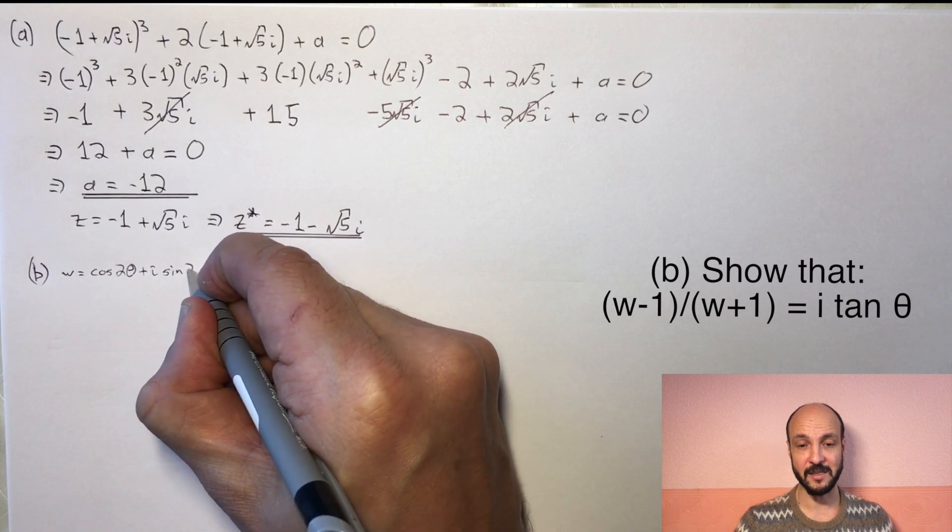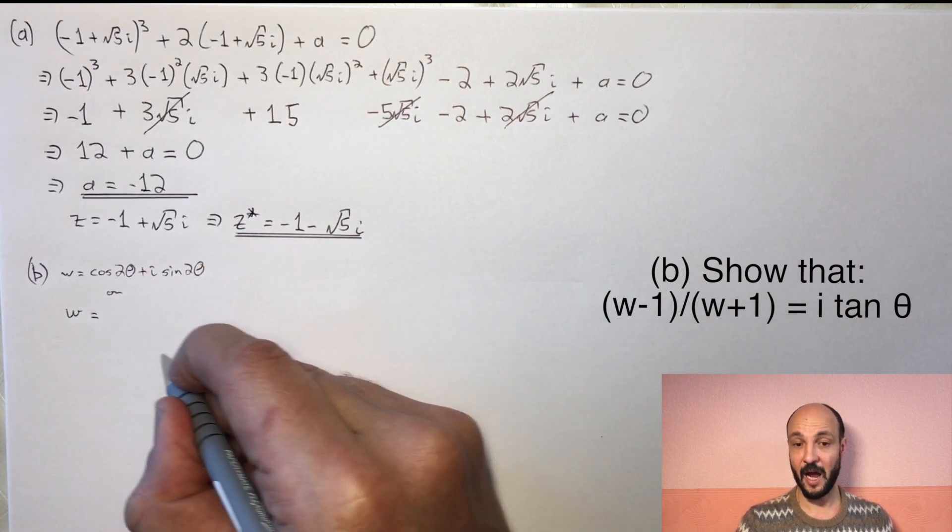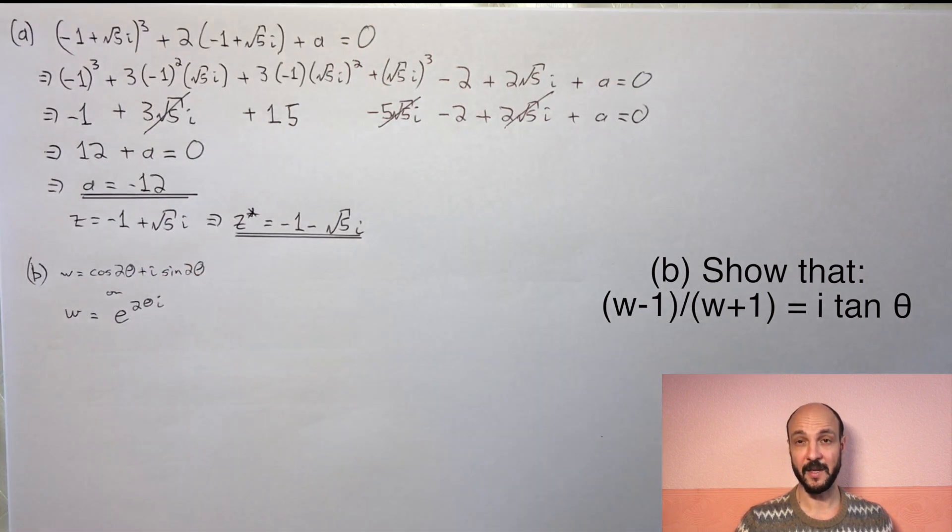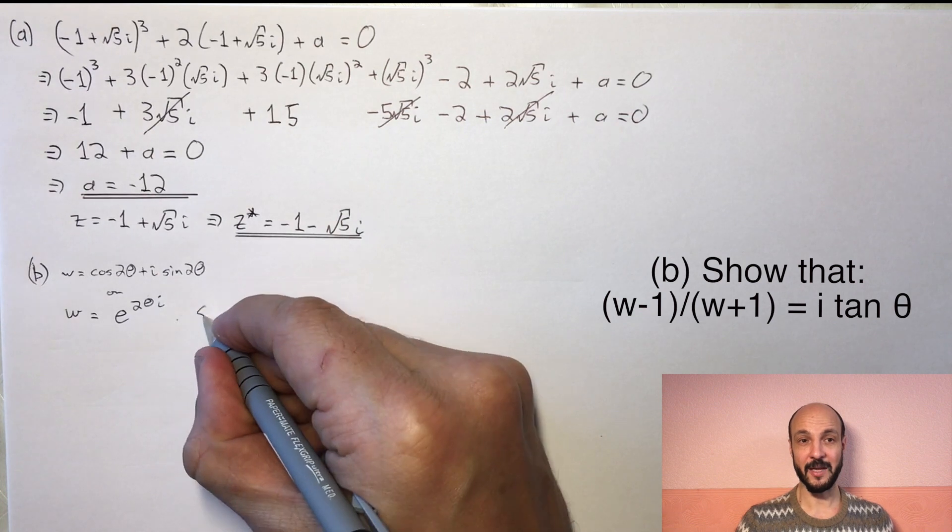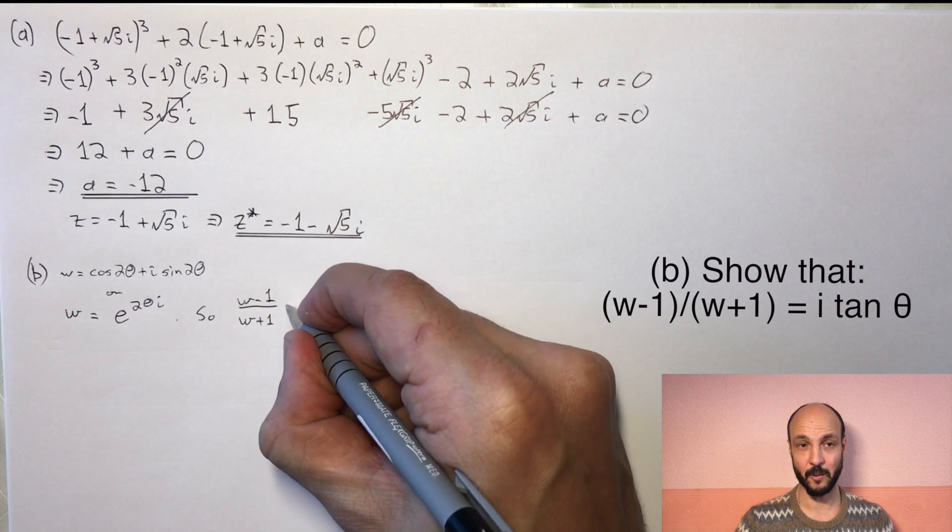So to start off, we've got a modulus of 1 and an argument of 2θ. So if we put that in exponential form, it's 1 × e^(2iθ), or simply e^(2iθ). So we want (w-1)/(w+1), which is (e^(2iθ) - 1)/(e^(2iθ) + 1).